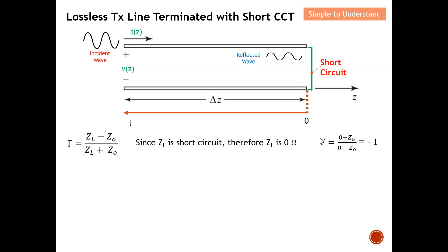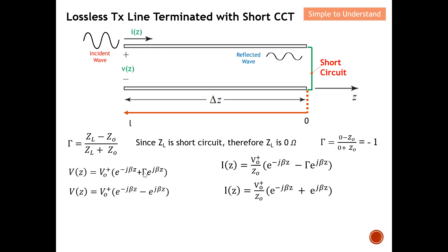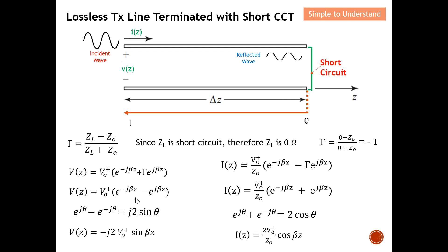For this first special case, Z-L is a short circuit, which means Z-L is approximately zero ohms. So replacing Z-L with zero, I calculate that the reflection coefficient equals minus one. Using this, I replace the reflection coefficient with minus one in the two sets of equations, so the minus-plus becomes minus, and minus-minus becomes positive, giving me another two sets of equations.